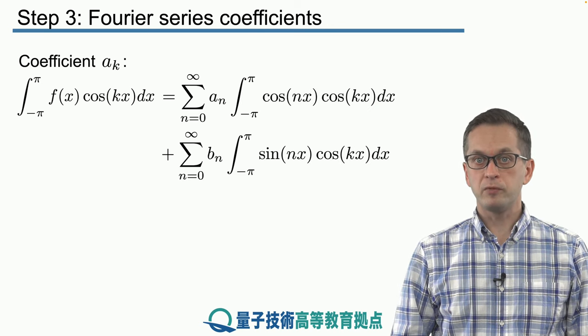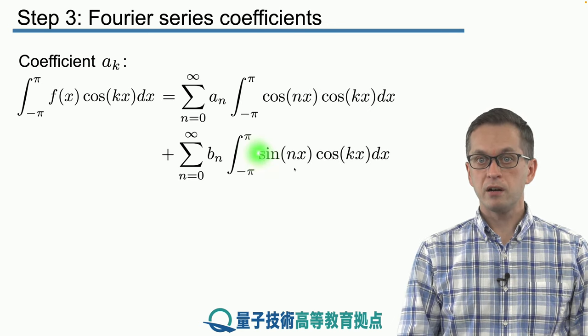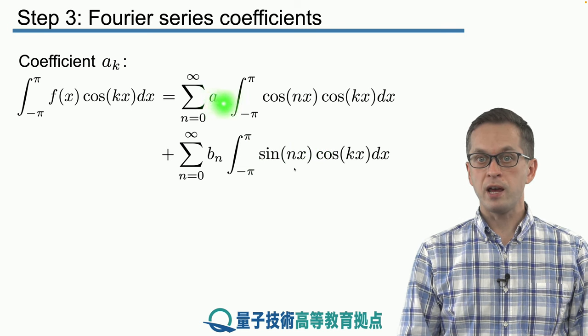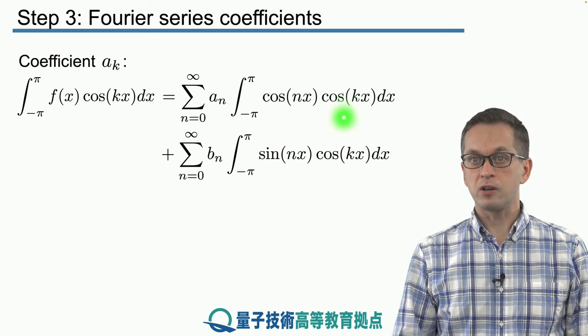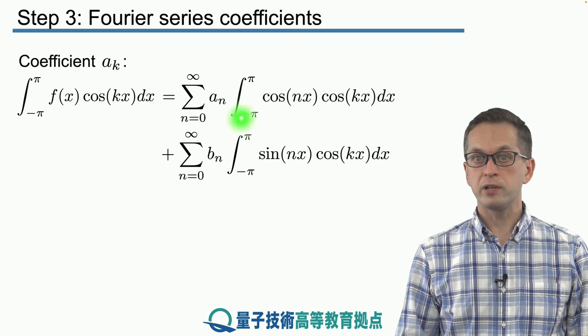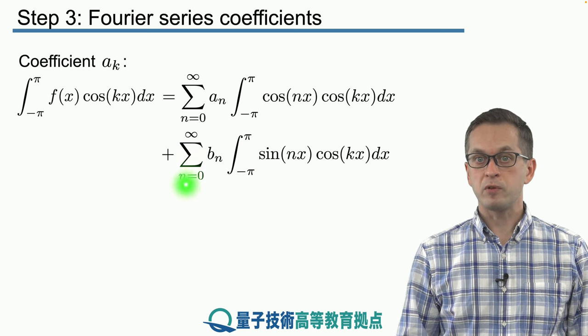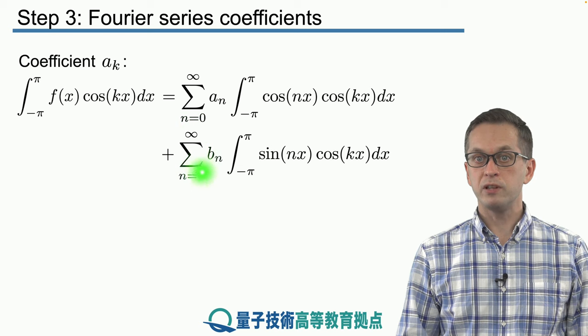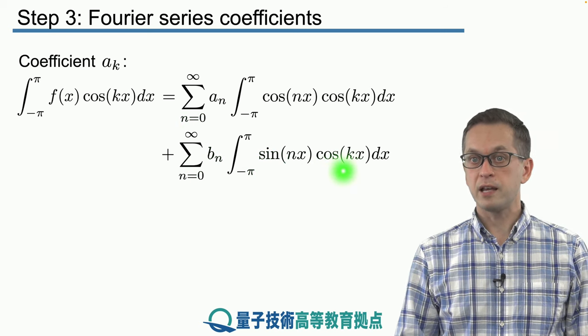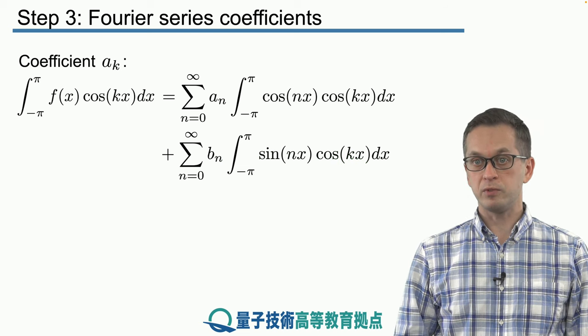So let's substitute for our function f(x). Here at the top we've got our sum over a_n cosine(nx) times cosine(kx), and here we've got our odd basis functions, the odd harmonics, the sines, and that's a sum from n equals 0 to infinity b_n times the inner product between sine(nx) times cosine(kx) with respect to x.